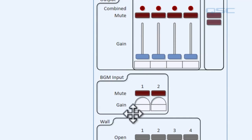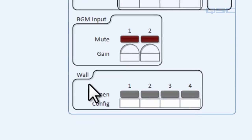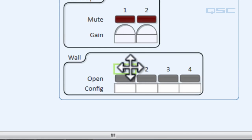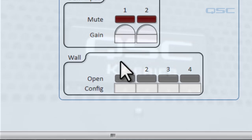In the wall section we can see controls that let us open and close any wall to combine the rooms. These numbers don't mean a whole lot because we don't have a floor plan to apply them to, so let's create a floor plan.